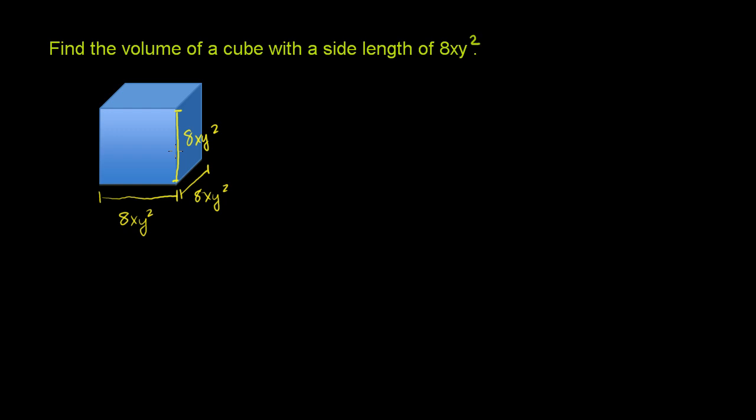A cube—all of the dimensions are the same. Now if you want to take the volume of any rectangular prism, you'll multiply these three dimensions. You'll multiply the width times the depth times the height.